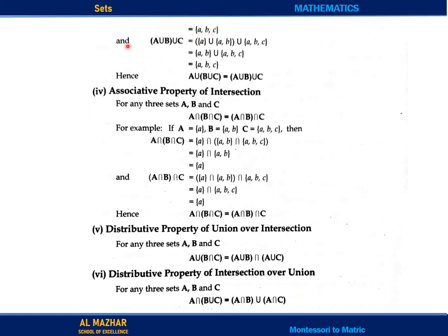Similarly, A union B bracket union C: taking (A union B) first gives {a, b}, then union with C which is {a, b, c} — common elements are {a, b}, so the result is {a, b, c}. Both sides give {a, b, c}, meaning A union (B union C) equals (A union B) union C — they are equal. This is our result for the associative property of union.